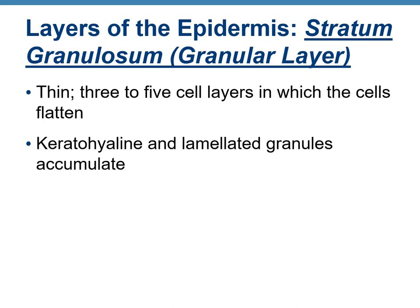The stratum granulosum is a thin layer of three to five cell layers. The cells are flat and the major protein is keratohyalin — keratin with some sugar molecules attached. It also contains laminated granules, which are fat granules. So there is an accumulation of keratohyalin and fat in the stratum granulosum.